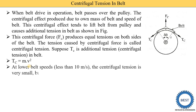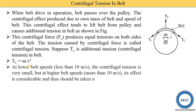At lower belt speeds — less than 10 meters per second — the centrifugal tension is very small. At higher belt speeds — more than 10 meters per second — its effect is considerable and must be taken into account. So if the belt speed is less than 10 meters per second we can neglect the centrifugal tension, but if it is more than 10 meters per second we must add the centrifugal tension into the tension equation.